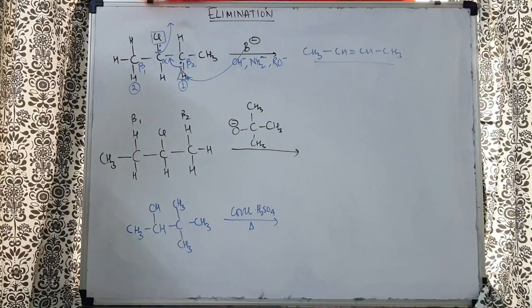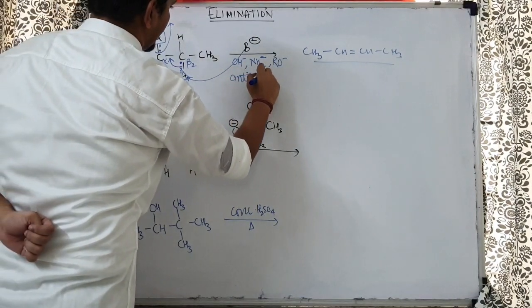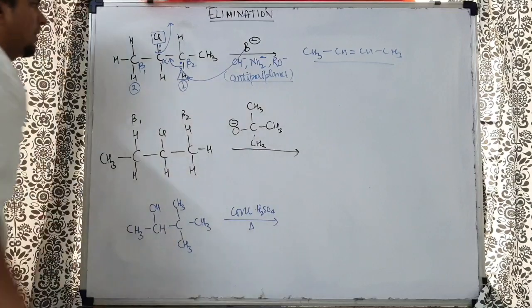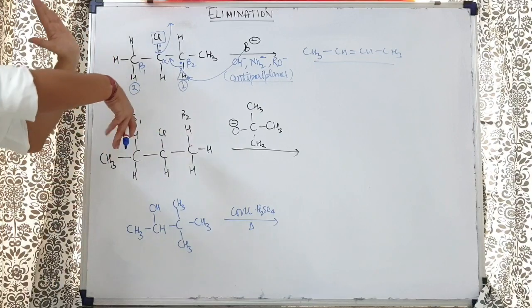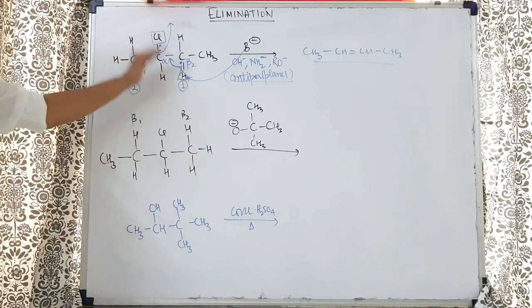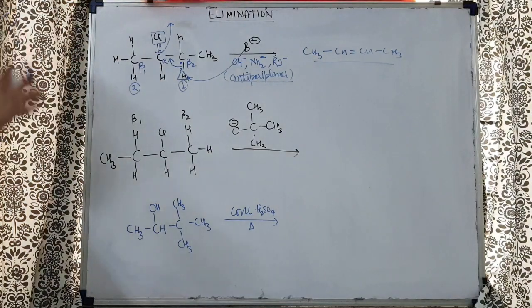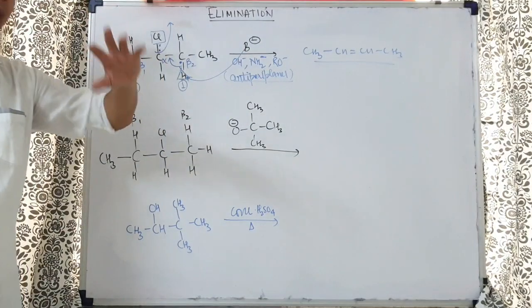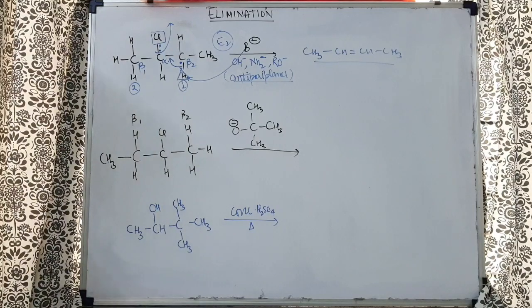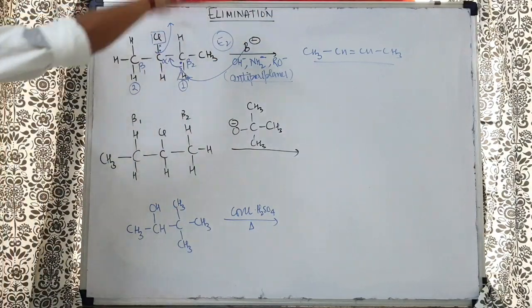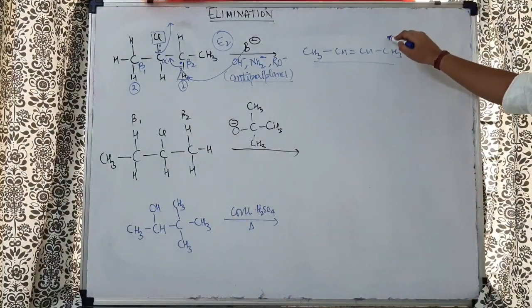This always happens in anti-periplanar geometry: if chlorine is pointing upward, the hydrogen must be pointing downward — they are always opposite in configuration for elimination to occur. The word 'anti-periplanar' is associated with E2 mechanism. So the mechanism is clear: B⁻ comes, takes the hydrogen away, electrons shift, Cl⁻ goes, giving the Saytzeff product as the major product. Now the question arises: if Saytzeff is more stable and is the major product, why does tertiary butoxide give Hoffman instead?